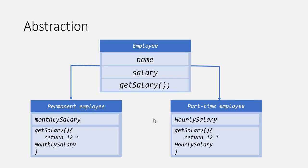Let's take another example. In an organization there are two types of employees — permanent employee and part-time employee — and both inherit from a single employee object. When an object inherits from an existing object, the inheriting object is called the child object, and the object from which it inherits is called the base or parent object. So part-time employee and permanent employee are child objects, and employee is the parent object.